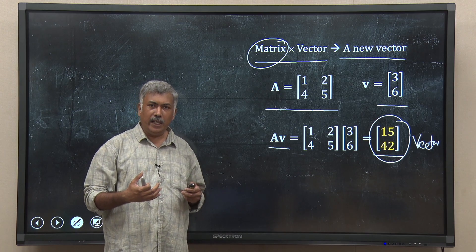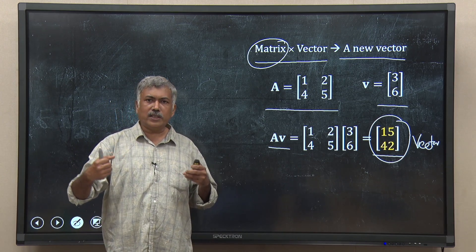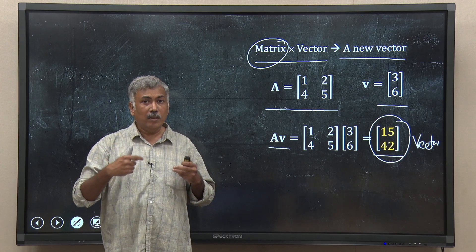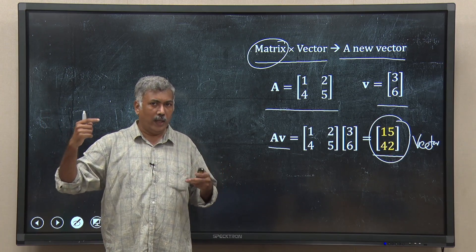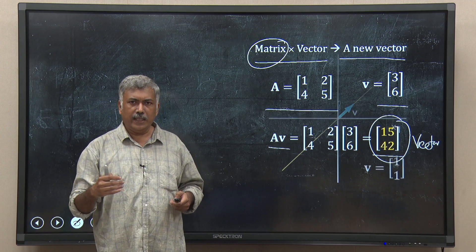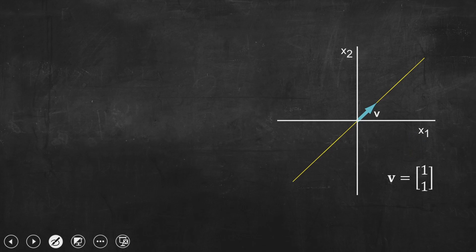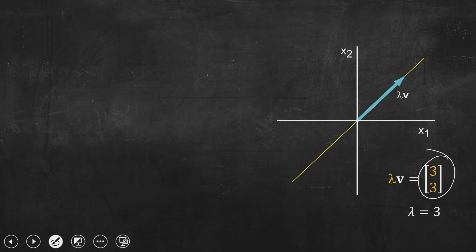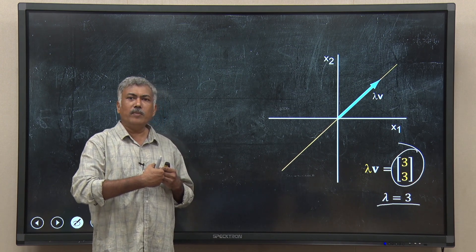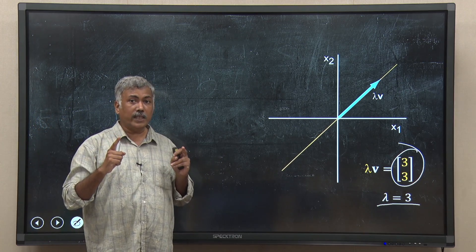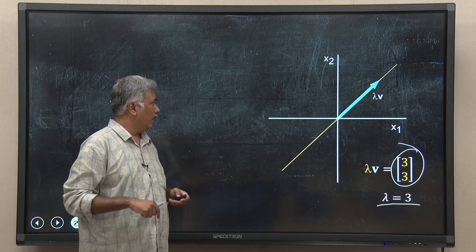We will use this technique so that we can actually stretch, flip, or squeeze a given vector but allow it to span only in that direction, nowhere else. Take the same diagram: the vector given here, v, is [1, 1]. Now I want to extend it by a scalar amount of 3 — I want to make it [3, 3]. Lambda here is 3. I want the vector to become thrice in length, but on the span, on that yellow line. So how can I do it? I want to do it by matrix multiplication.